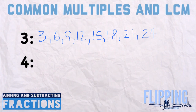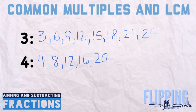We're going to do the same thing with 4's. We start with itself: 4, then 4 times 2 is 8, 4 times 3 is 12, and keep going: 16, 20, and 24.